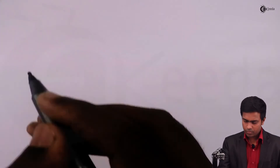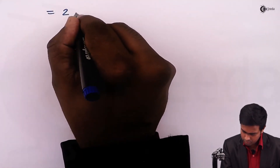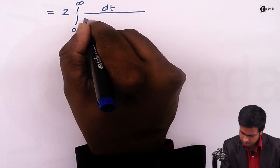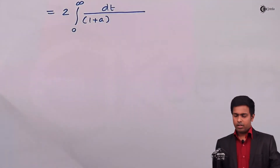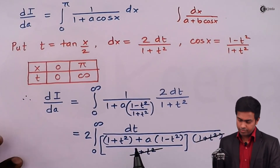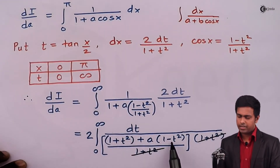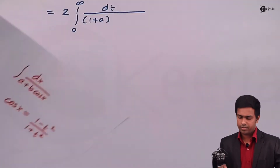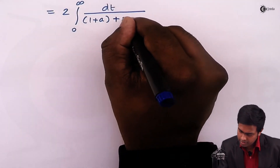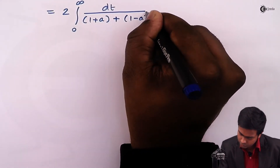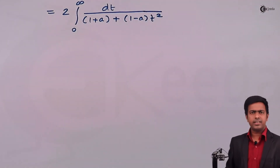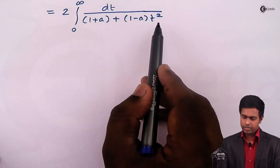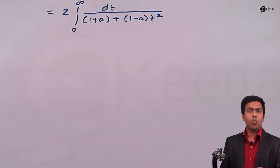So the t² part: we have t² from the first term and −at² from the second. Taking t² common gives (1 − a)t². Therefore the denominator becomes (1 + a) + (1 − a)t².